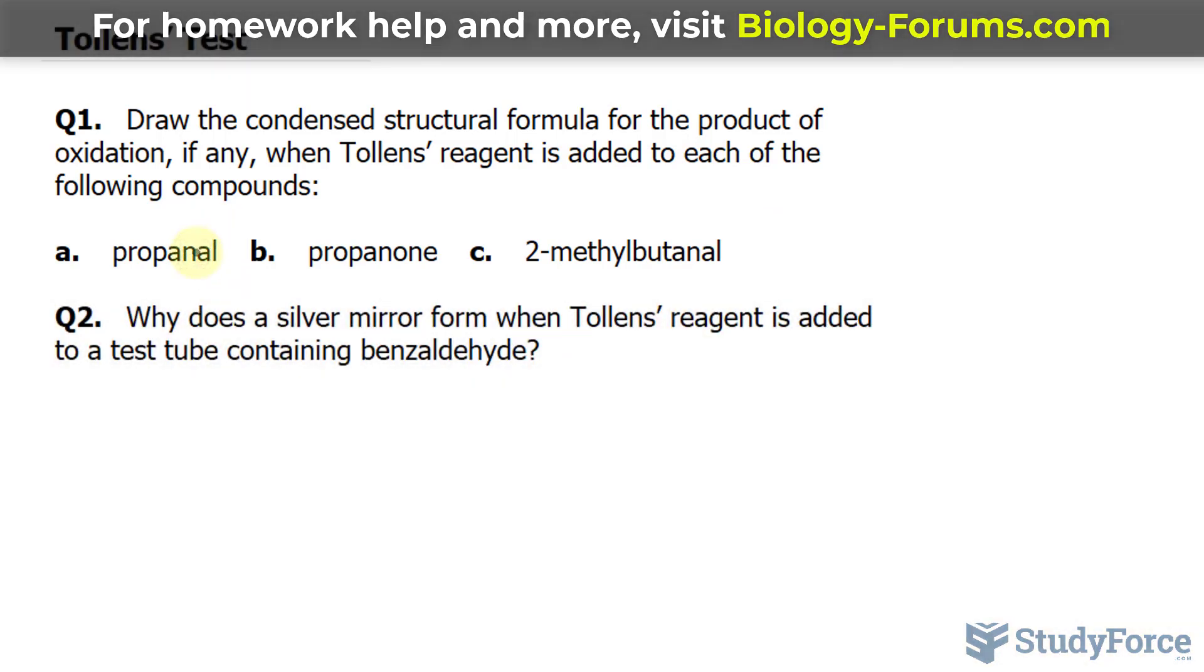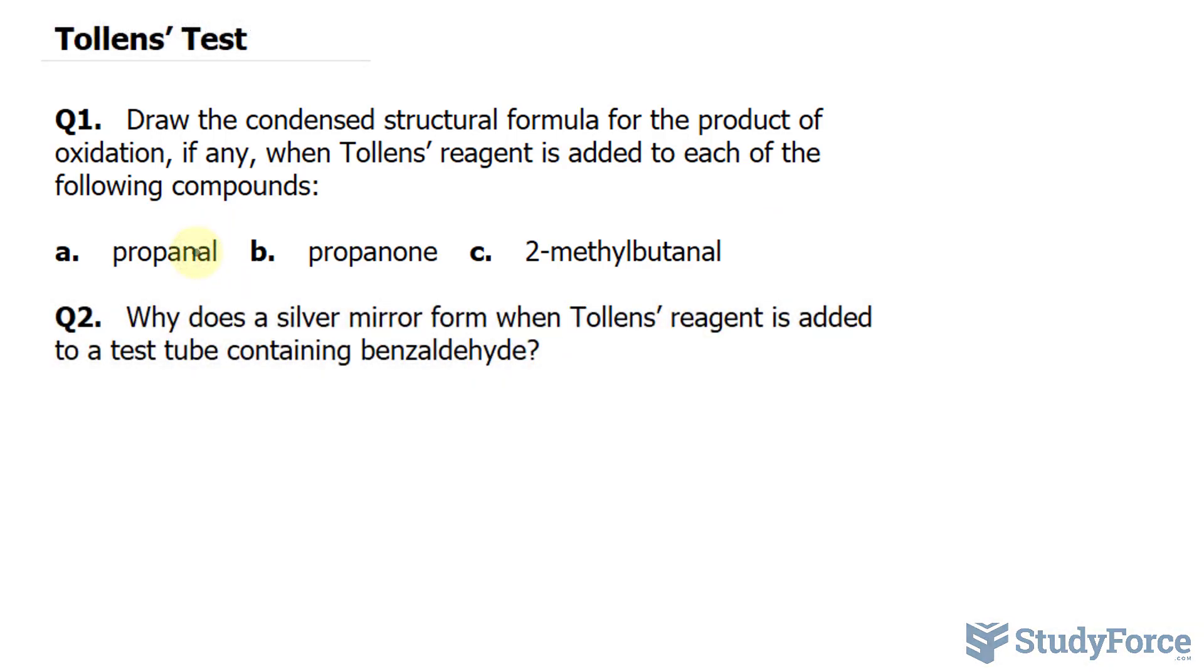Notice the suffix of each of these words. They have -al, -one, and -al. -one are ketones, and when they end with -al, that's an aldehyde. That will be important because Tollens' reagent is a chemical reagent used to determine the presence of an aldehyde. They will react with aldehydes, not ketones.